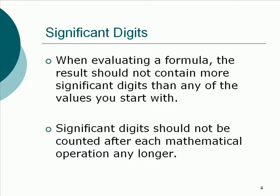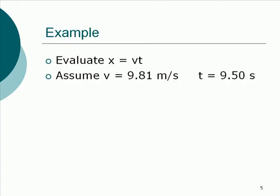So let's take a look at a couple of examples of this. First one, we're going to start out with a very simple formula. What we want to evaluate is the formula x equals vt, where v is equal to 9.81 meters per second, and t is 9.50 seconds.